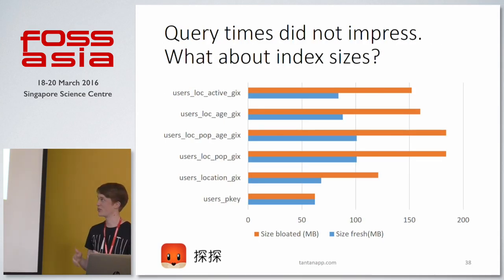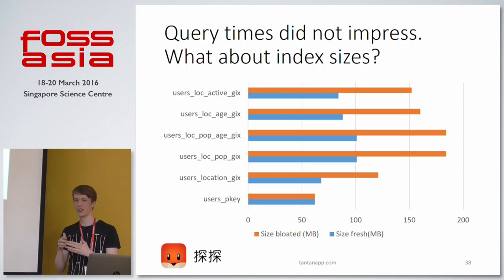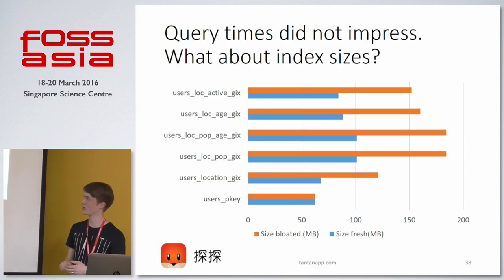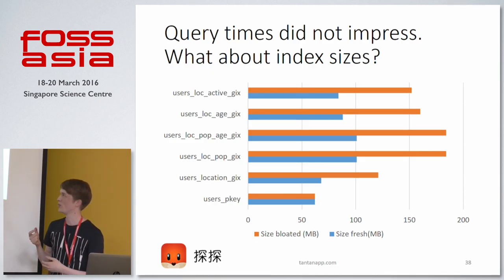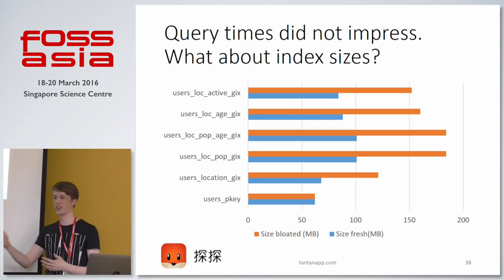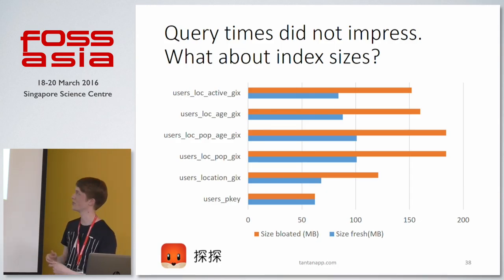The query times didn't really impress us, but looking at the index sizes gets more interesting. In blue are the fresh indexes and in orange after I made them bloated by updating every row. The indexes do increase a little bit, but the difference between two dimensions and three dimensions is not that big. If the query times were acceptable, the index sizes would be fine — we'd need a bit more RAM but it would be okay.